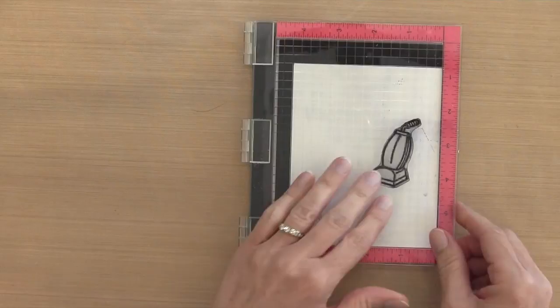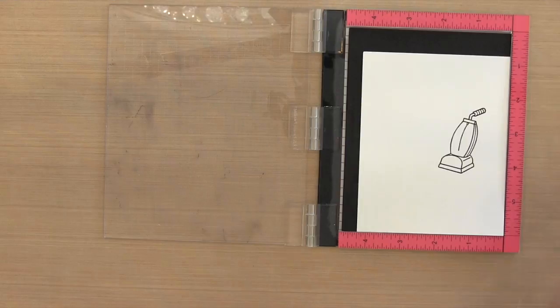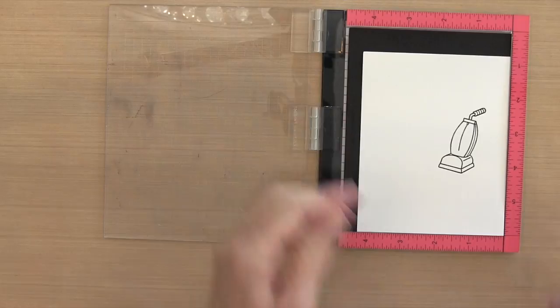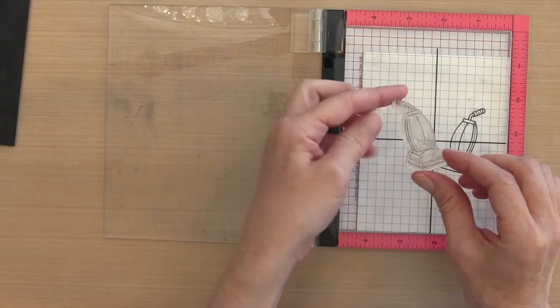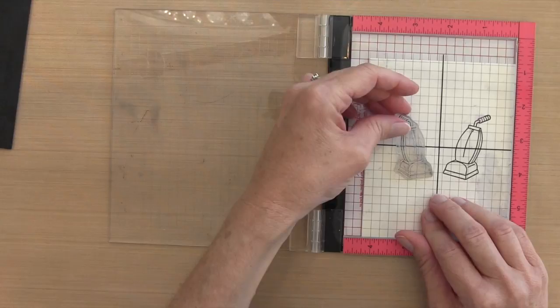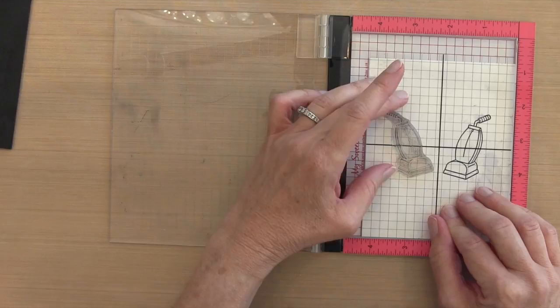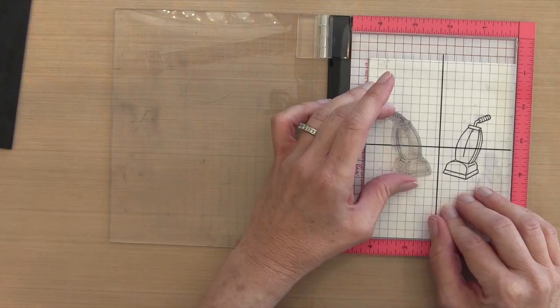Once I stamp that, now I'm going to really clean off my stamp well. Then I'm going to remove the foam backing from my MISTI because I'm going to double up on my stamps. I'm going to use my grid sheet, not for lining up but because I need something for my stamp to stick to. I've turned it upside down so that the image side is facing up, and I want to place it on my grid sheet exactly where it needs to be.